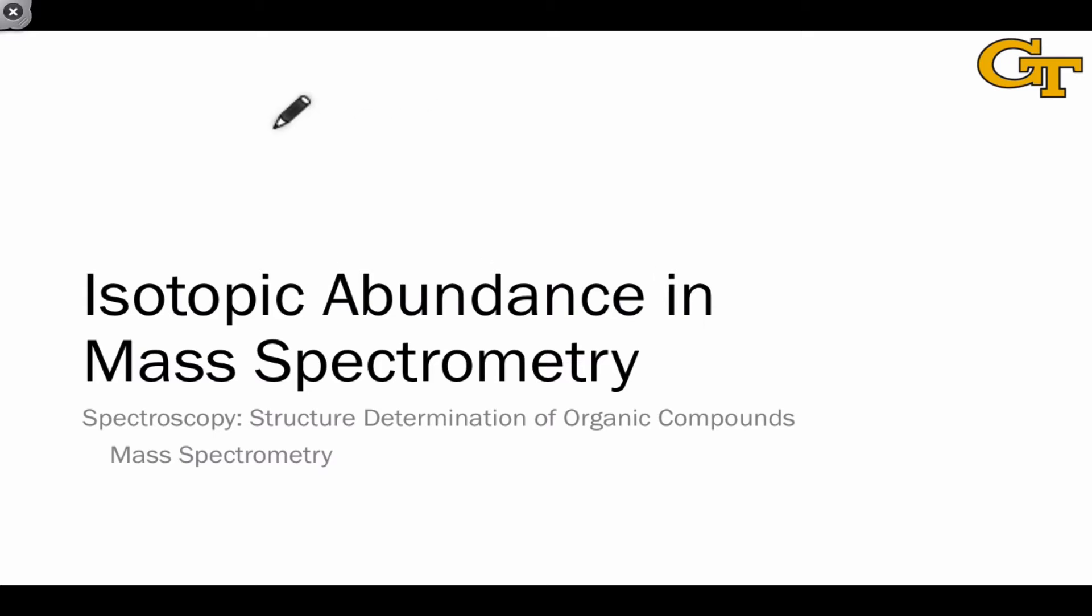For most elements of organic chemistry, a single isotope dominates. This means we don't have to worry about different isotopes showing up in different molecules and translating an effect to a mass spectrum, where, for example, we get multiple molecular ion peaks.